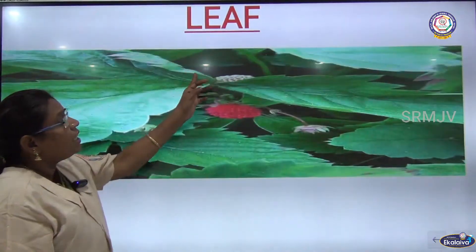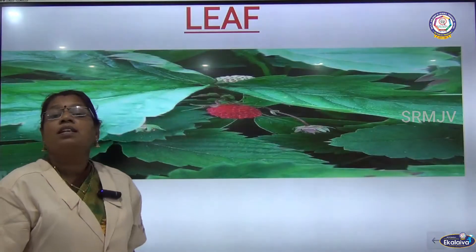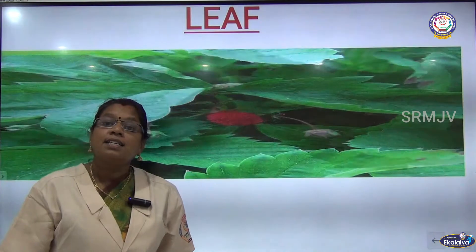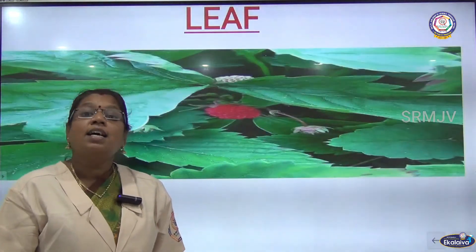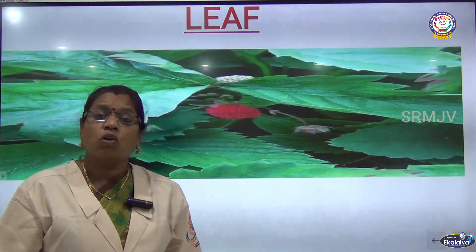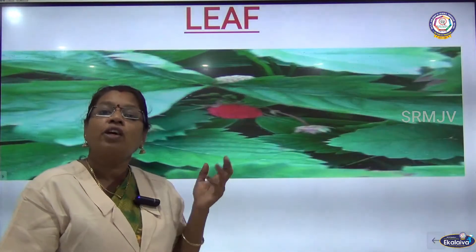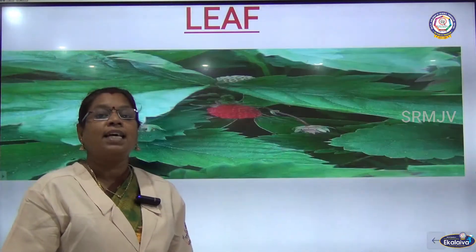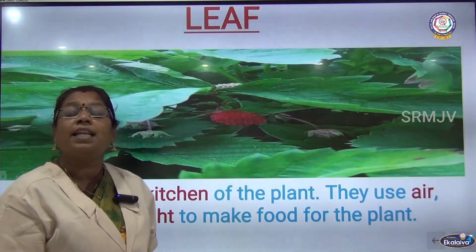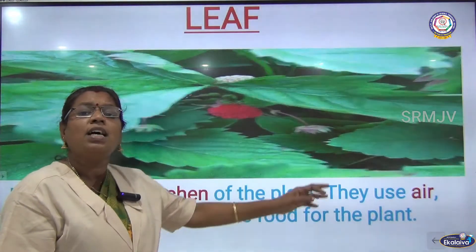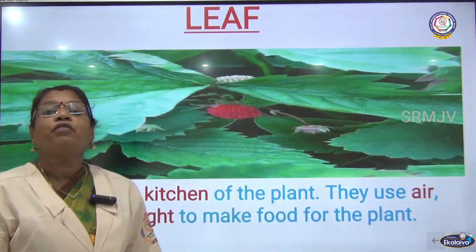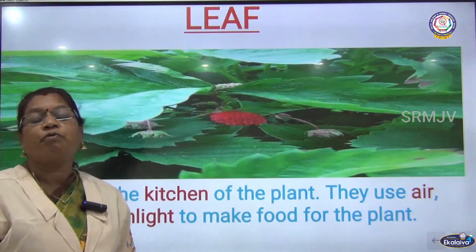Next is the leaf. Just as your mother prepares food in the kitchen, leaves are called the kitchen of the plant. They prepare food using air, water and sunlight.